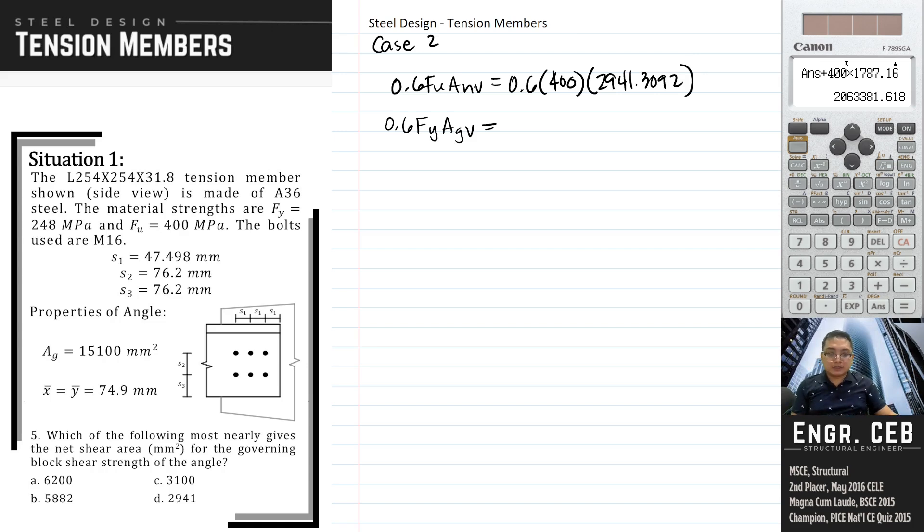So let us solve for that. 0.6 times 400 times 2941.3092. That is 705914.208 N.